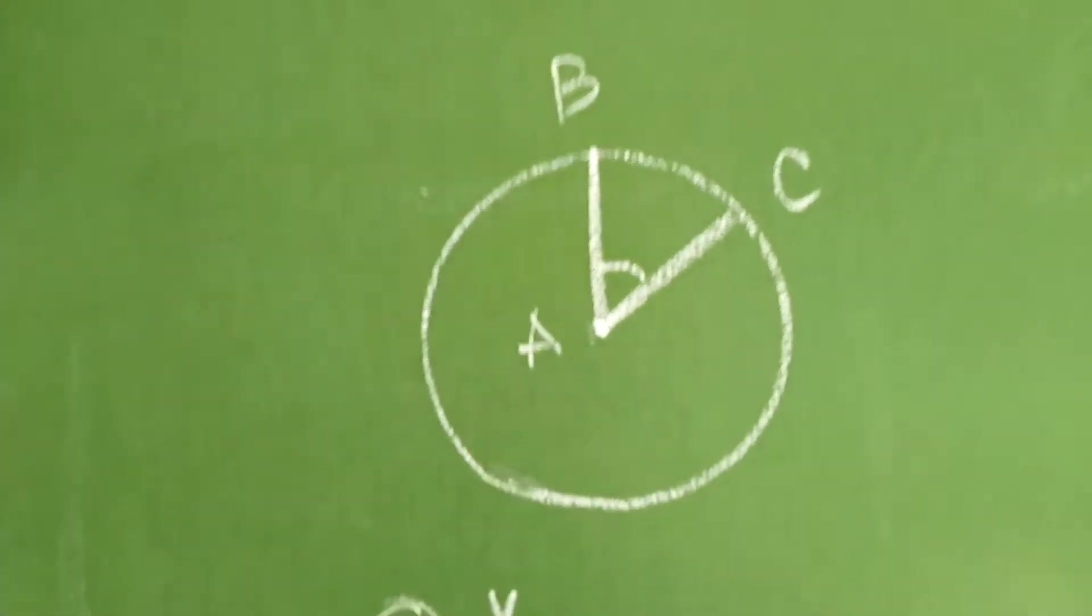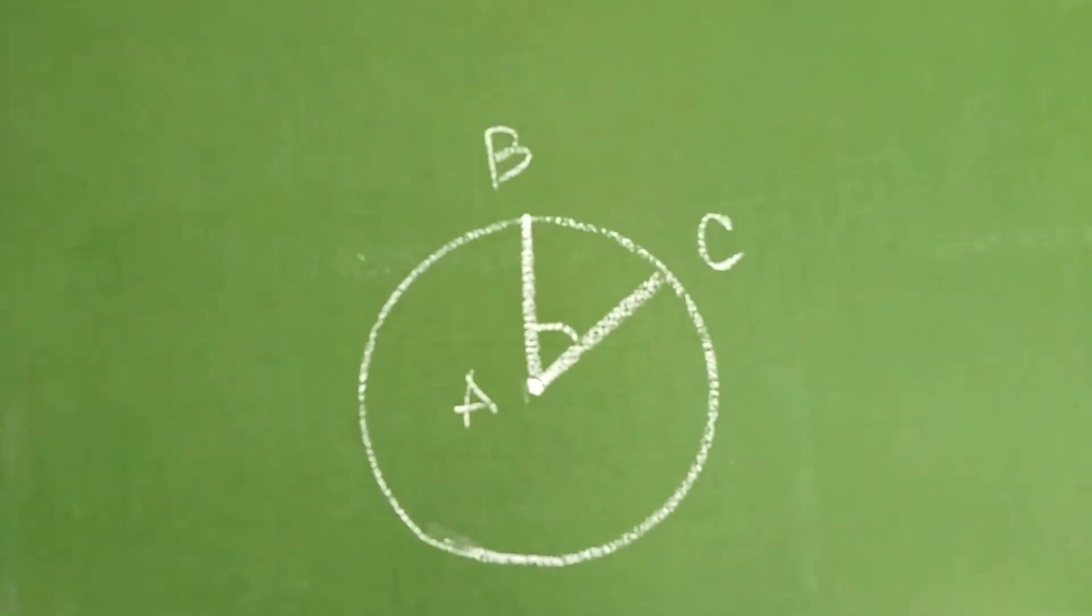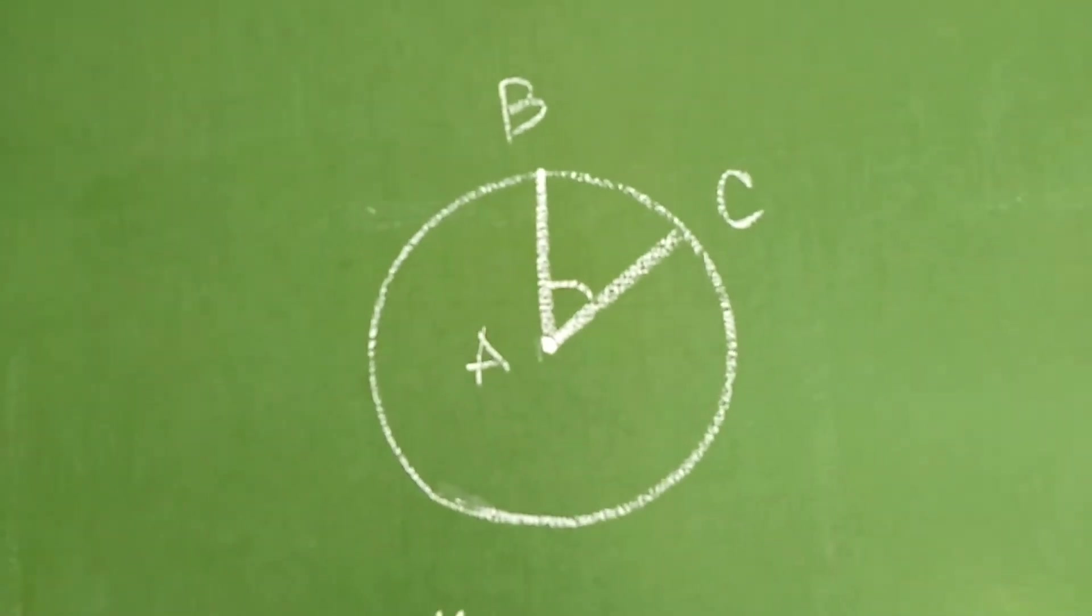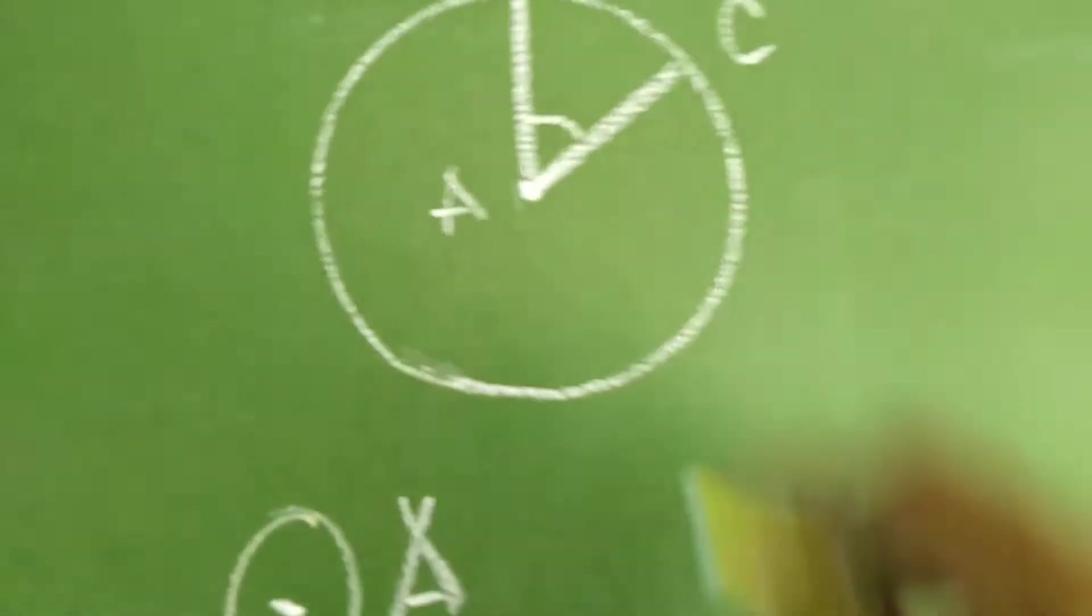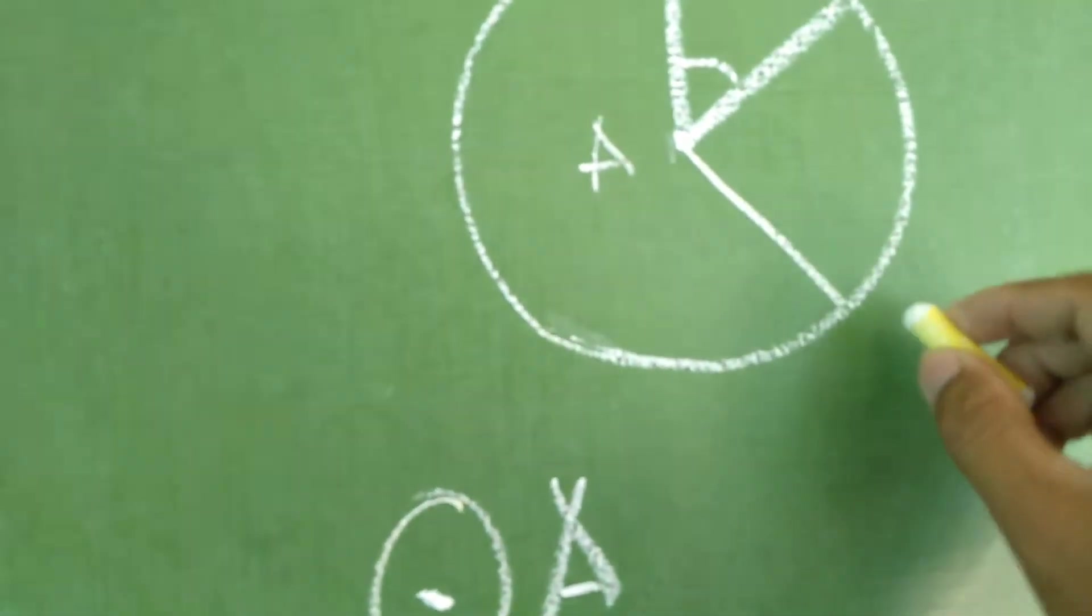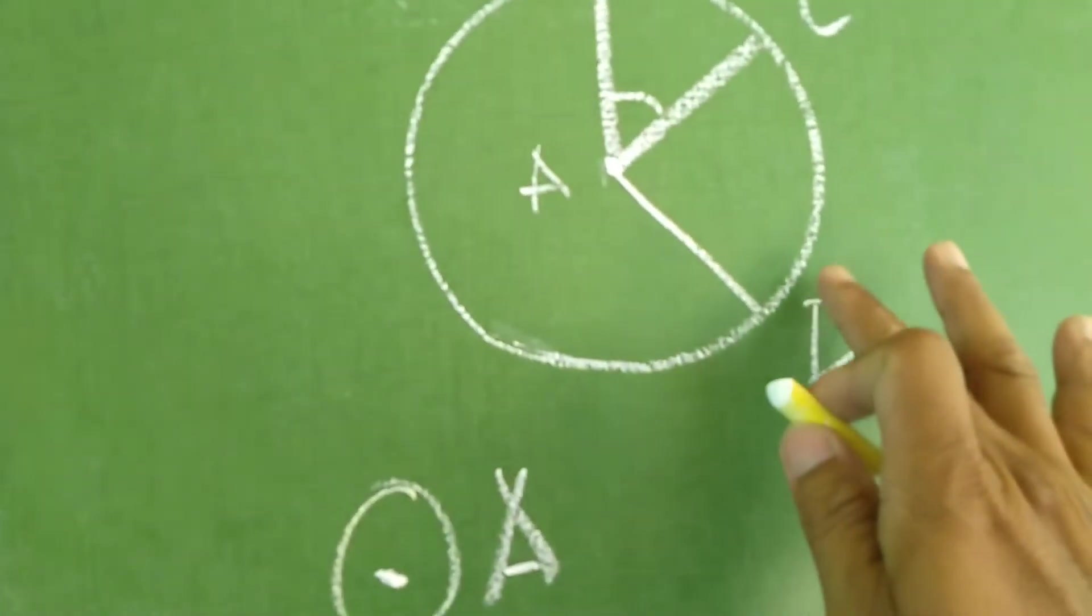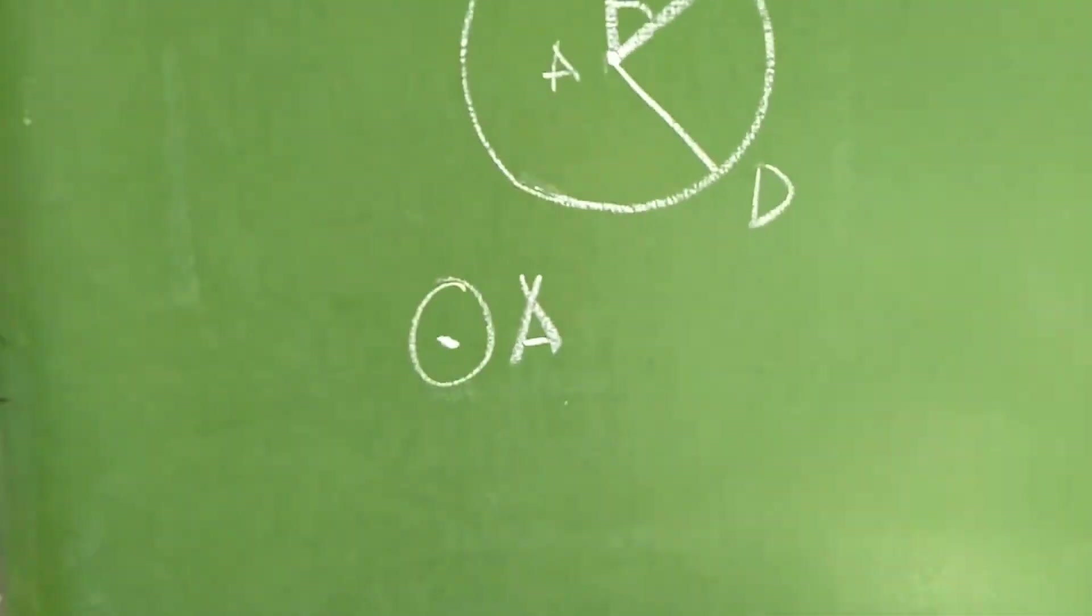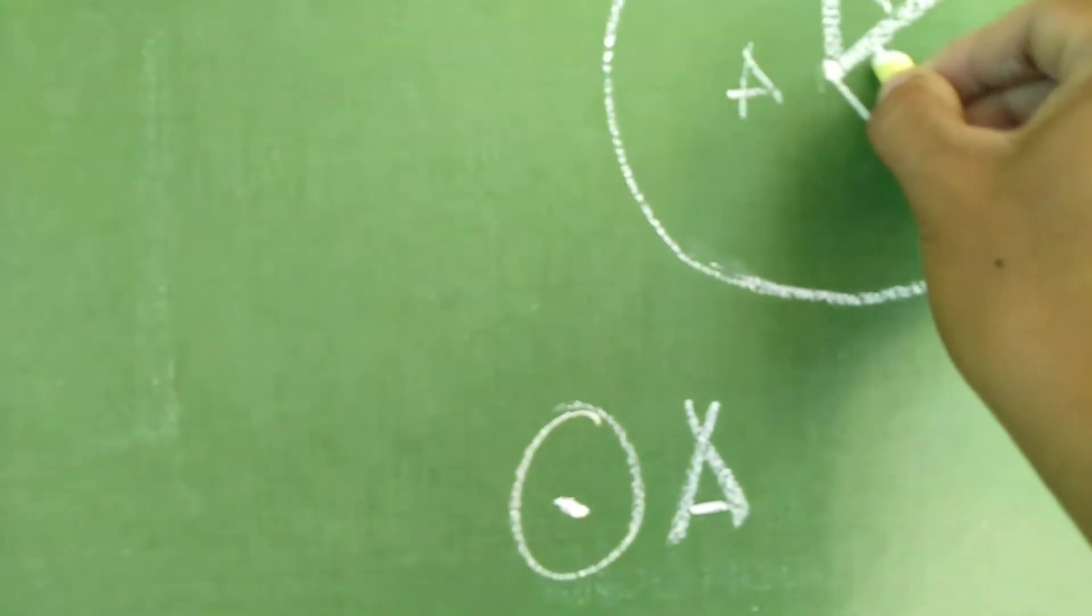Okay, next, Central Angle. Iisa lang po ang na-drawing po dito na Central Angle po natin. Okay, maglalagay pa po ako ng isa para mas maano natin, no? Okay, maglalagay ako ng another variable. Okay, D.